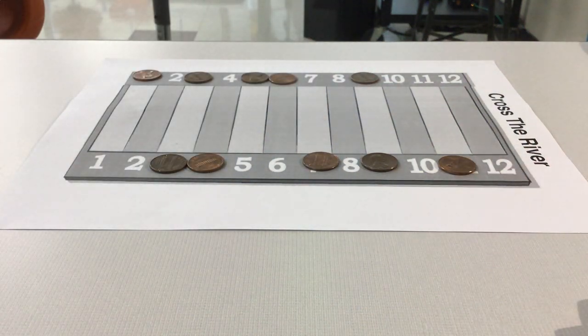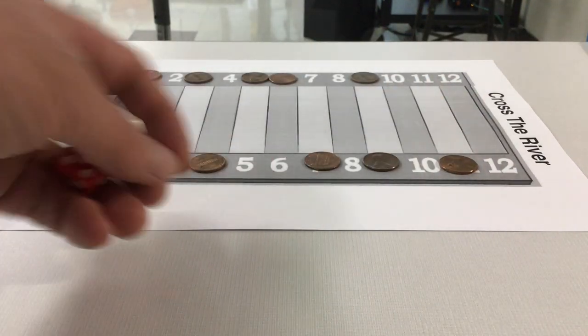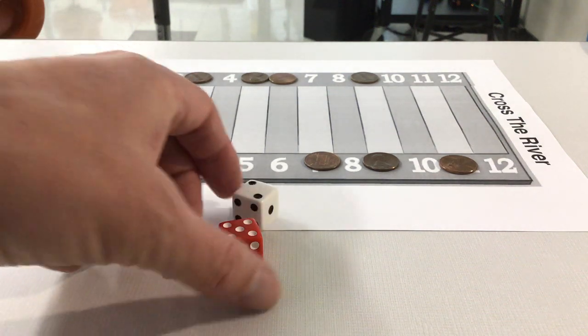Then you get two dice. Now what you're going to do with the two dice is you're going to roll the dice. So let's say it's this person's turn.